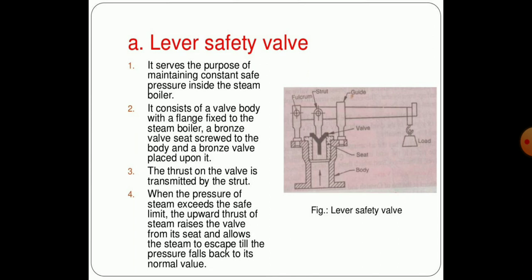It consists of a valve body with a flange fixed to the steam boiler and a bronze valve seat screwed to the body which is placed upon it. The thrust of the valve is transmitted by the stud and lever. When the pressure of the steam exceeds the safe limit, the upward thrust of the steam raises the valve from its seat and allows the steam to escape till the pressure falls back to its normal value.